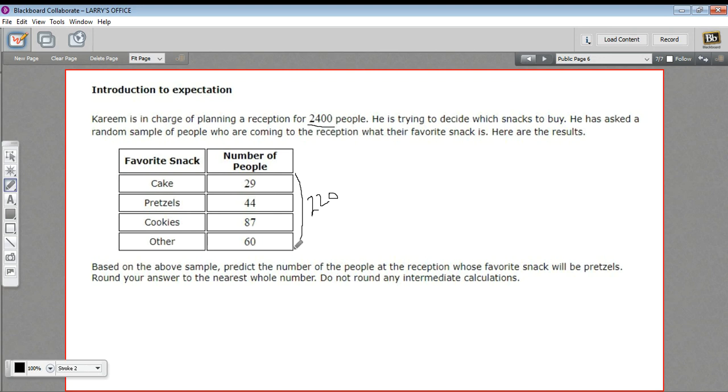And then it says, based on this sample, predict the number of people at the reception whose favorite snack will be pretzels. To do this, we are going to create a proportion. I'm going to start by making a ratio of the people in our sample who like pretzels out of the total in our sample. So that would be 44 out of 220. We'll set that equal to a similar ratio where we have the number of people who like pretzels over the total of the actual reception. So we'll put 2,400 here on the bottom, and we don't know the number yet who are likely to like pretzels, so we'll put x up here.